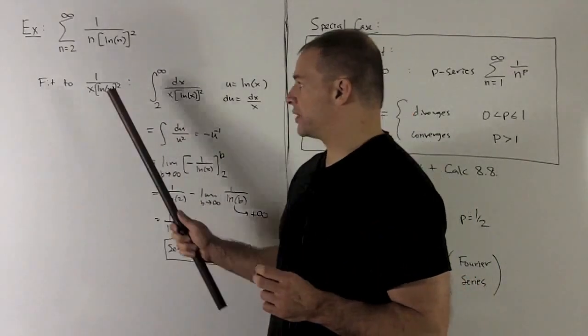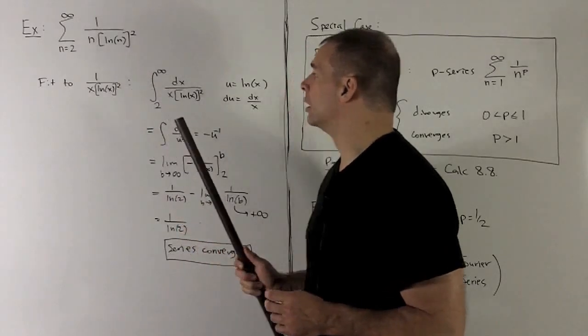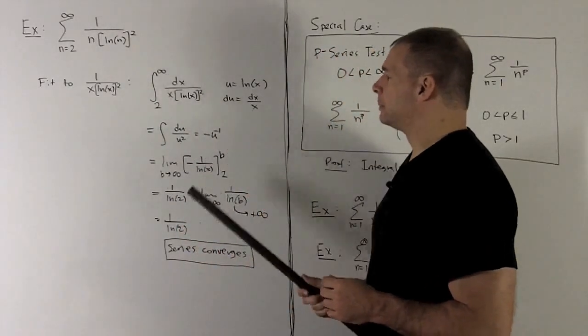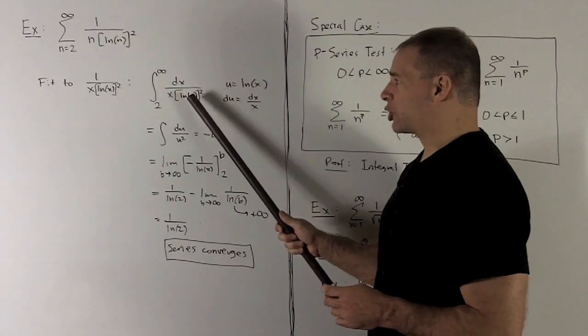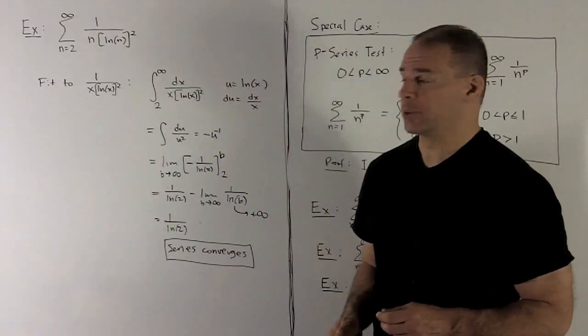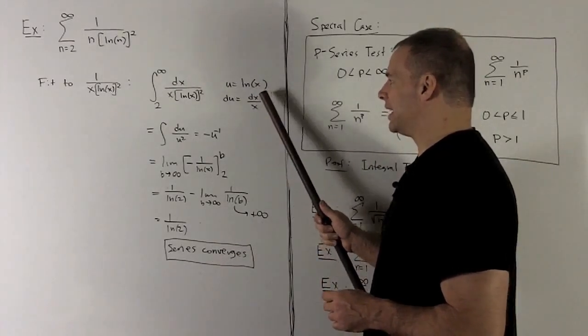So, I'm going to fit this to 1 over x natural log of x squared. We'll write our improper integral down. We notice the way that we're going to solve this, I have a natural log of x inside of a square, so it's a u substitution. u is natural log of x, du is dx over x.